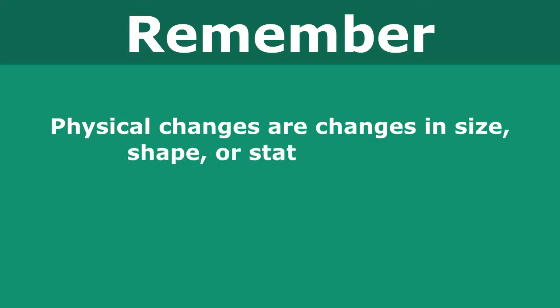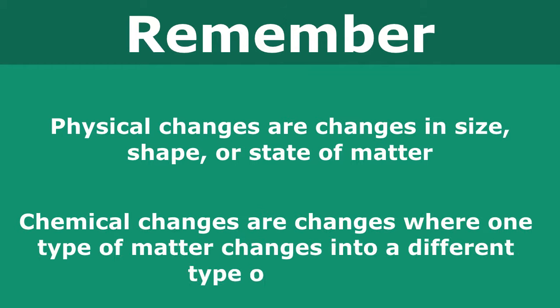So from today, remember. Physical changes are changes in size, shape, or the state of matter. But with a physical change, no new substance is created. In contrast, a chemical change is a change where one type of matter changes into a different type of matter.